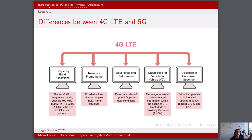In terms of data rates, LTE offers peak data rates of up to 1 Gbps in ideal conditions. However, in real-world scenarios, the typical download speed ranges from 5 Mbps to 100 Mbps, depending on network conditions and congestion. In terms of the vehicle-to-vehicle context, LTE supports some basic vehicle-to-vehicle communication capabilities, allowing vehicles to exchange essential safety-related information within the scope of LTE direct mode and proximity services.